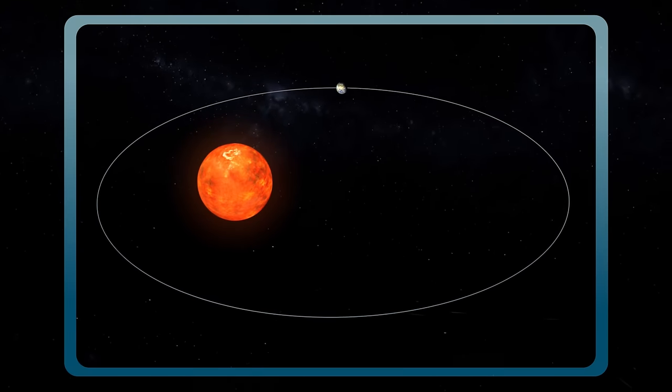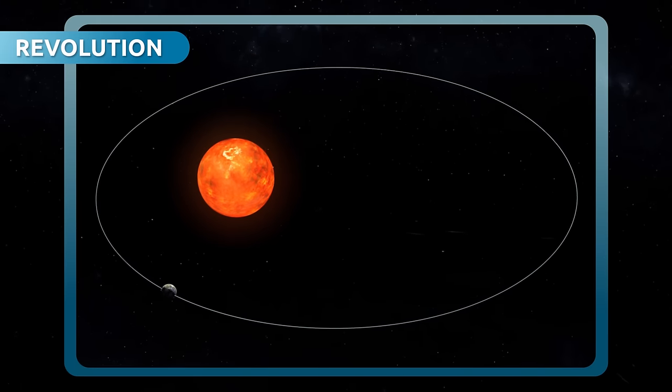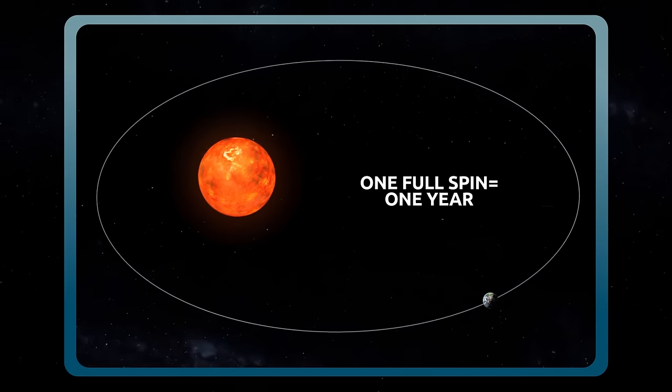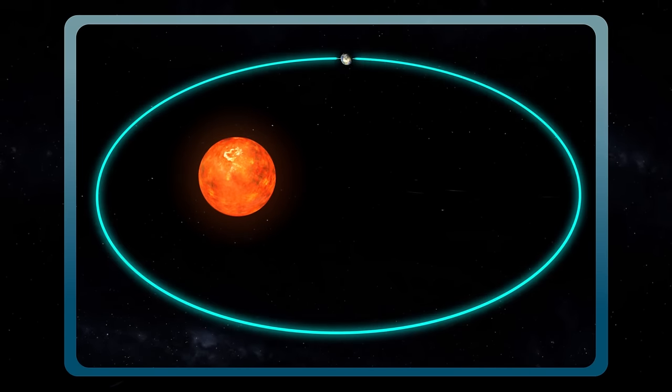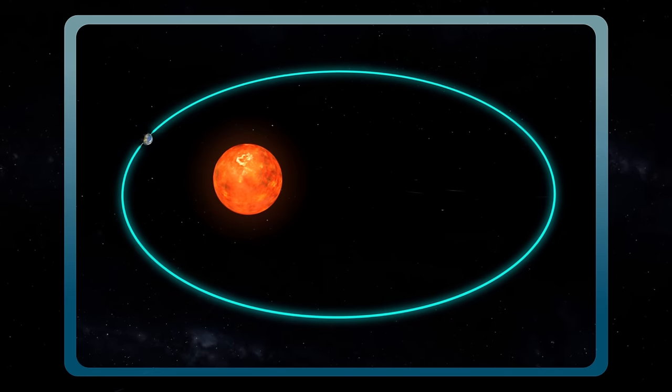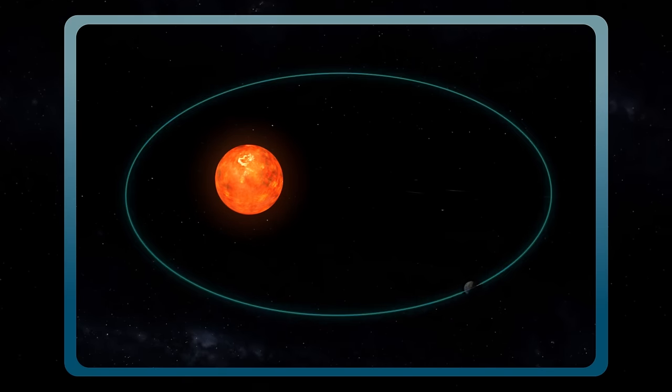The movement of the Earth around the Sun is called revolution. The Earth takes one whole year to go around the Sun. Before, people used to think that the orbit of the Earth around the Sun was cyclical, but they weren't right. As you can see here, the orbit is elliptical.